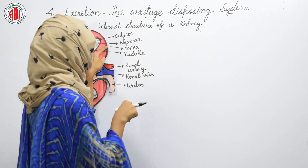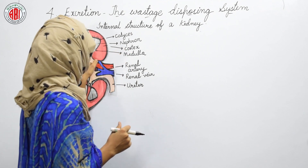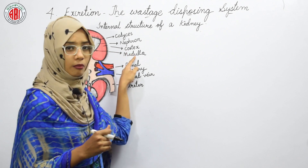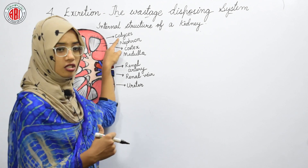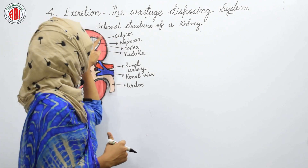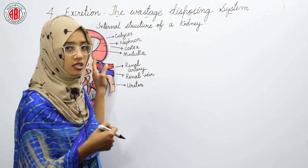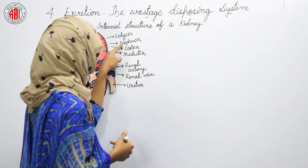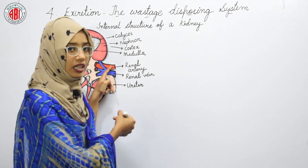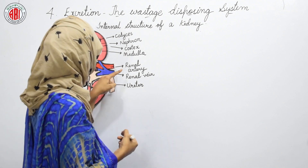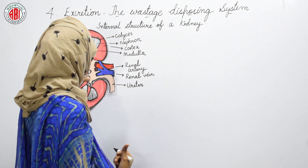The first part is reddish-brown in color and we call it the cortex. The central part is red in color and we call it the medulla. The bundle-shaped structures we call calices, and in these calices we have nephrons, which are thread-like or fiber-like structures. The kidney is also connected to two blood vessels: the renal artery and the renal vein.